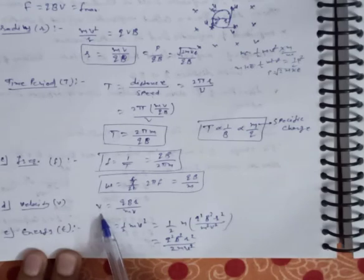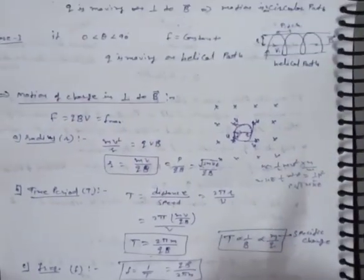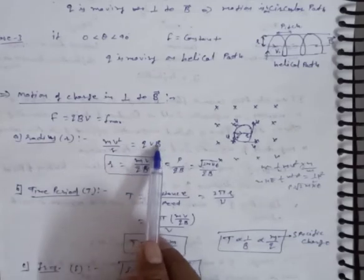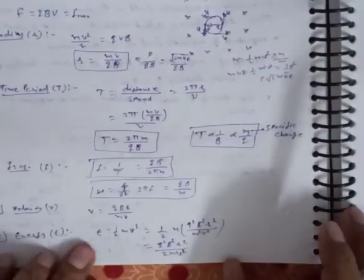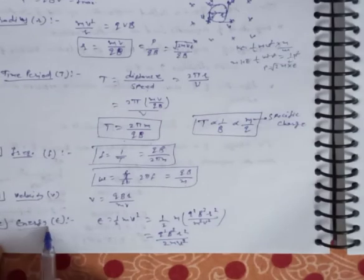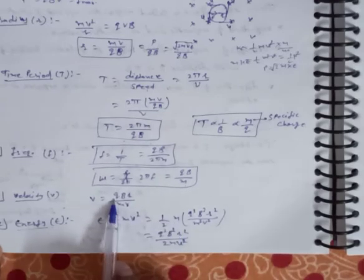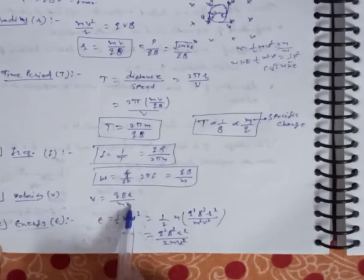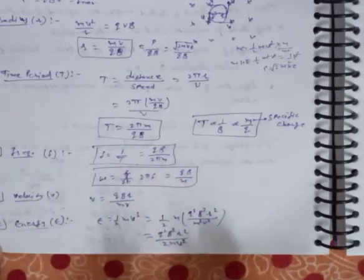For velocity, from the radius formula mv²/r = qvB, simplifying gives v = qBr/m. For kinetic energy (KE = ½mv²), substituting v = qBr/m: KE = ½m(qBr/m)² = q²B²r²/(2m). This is the special case when the particle moves perpendicular to the magnetic field.